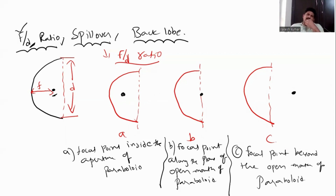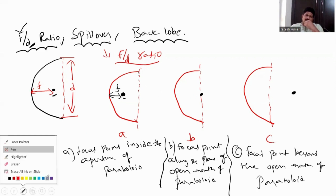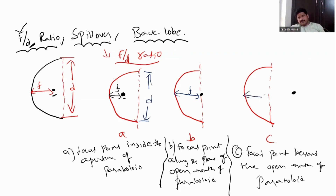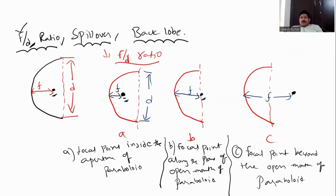In the first case, I have kept the focal point very inside — this is my opening. This is my F. In the second case, this is my F and this is your D. In the third case, the focal point is beyond the open mouth. What will happen if you keep your focal point inside the aperture? What will happen if you keep it along the plane of the open mouth? What will happen if you keep it beyond the open mouth?